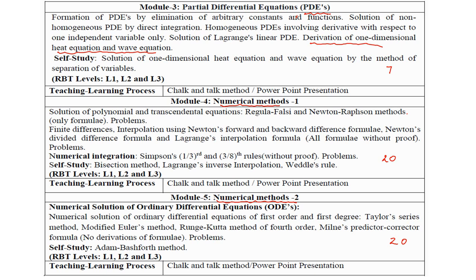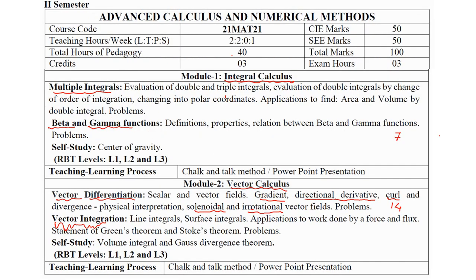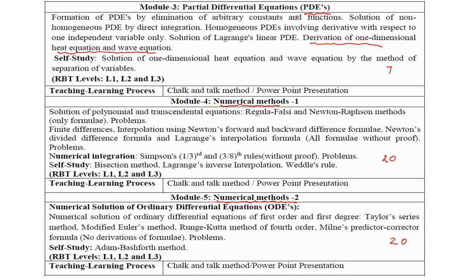Adding up all the modules: module 1 gives 7, module 2 gives 14, module 3 gives 7, and modules 4 and 5 give 20 each. So totally, 7 plus 14 plus 7 plus 20 plus 20 gives you 68 marks. Definitely, you can score 68 marks.